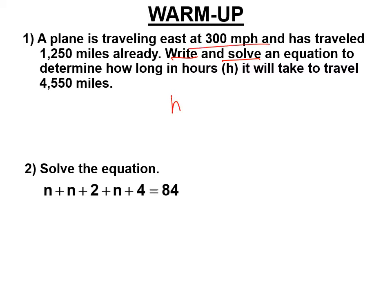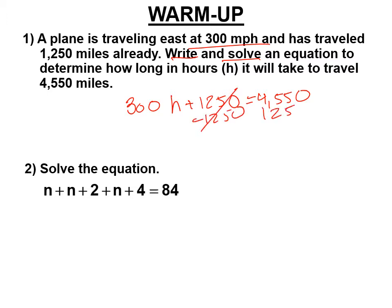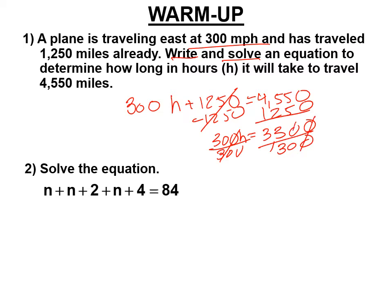The rate is 300 miles per hour, it's traveled 1,250 miles already, and we're going a total of 4,550 miles. We're going to solve this equation. Subtract 1,250 from both sides. 300H equals 3,300. Divide both sides by 300 — cross out these zeros and it's going to take 11 hours.